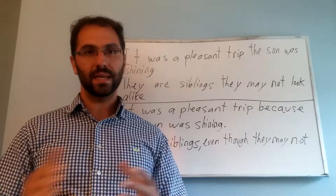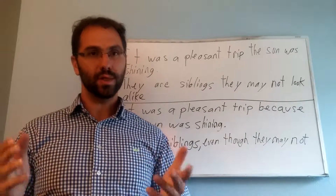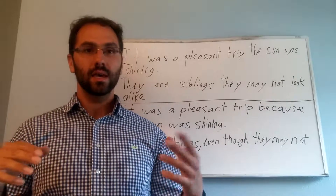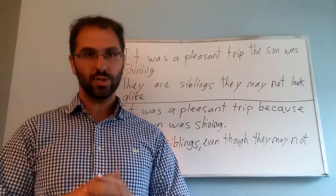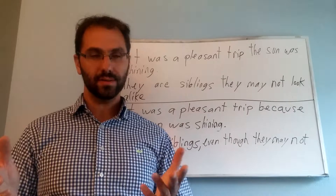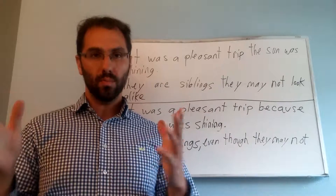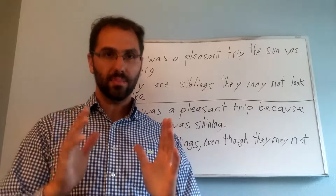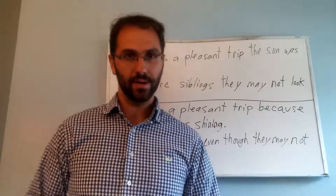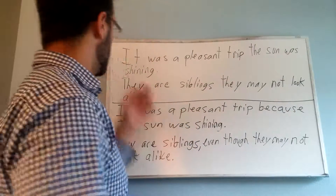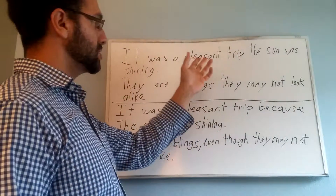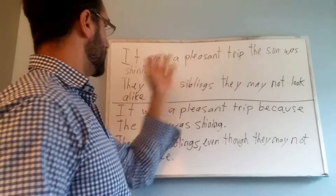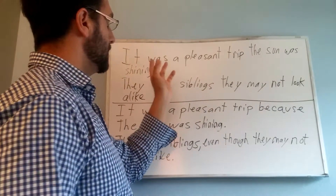So another type of typical sentence error is a run-on sentence, and this is in which two independent clauses, or more, are improperly joined together. For instance, it was a pleasant trip, the sun was shining.